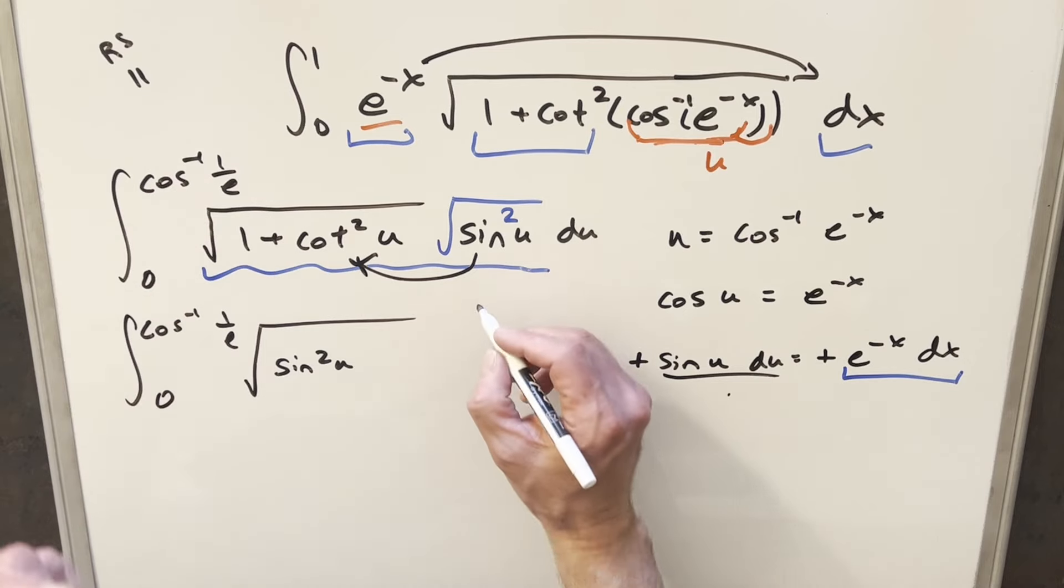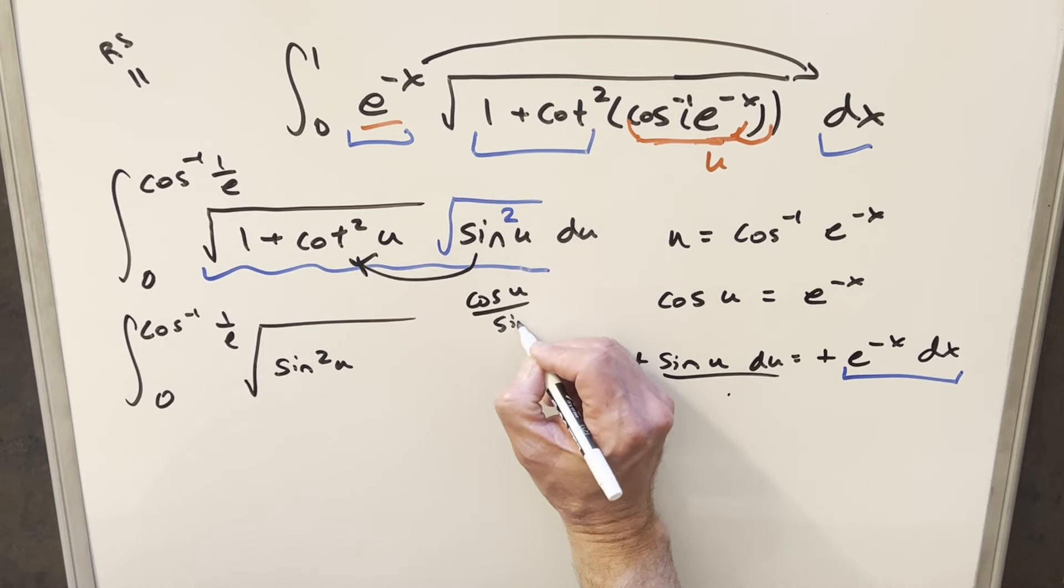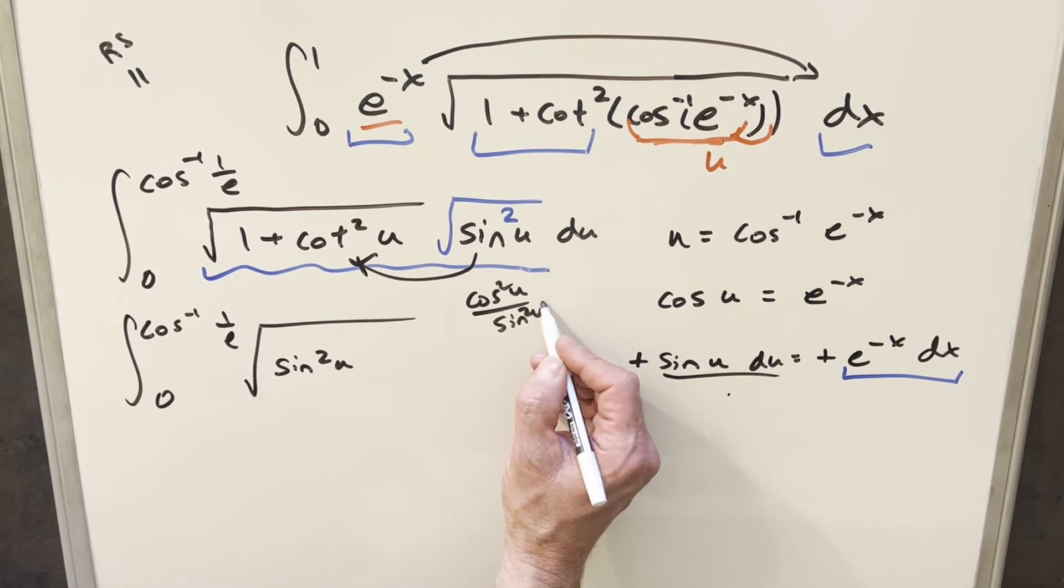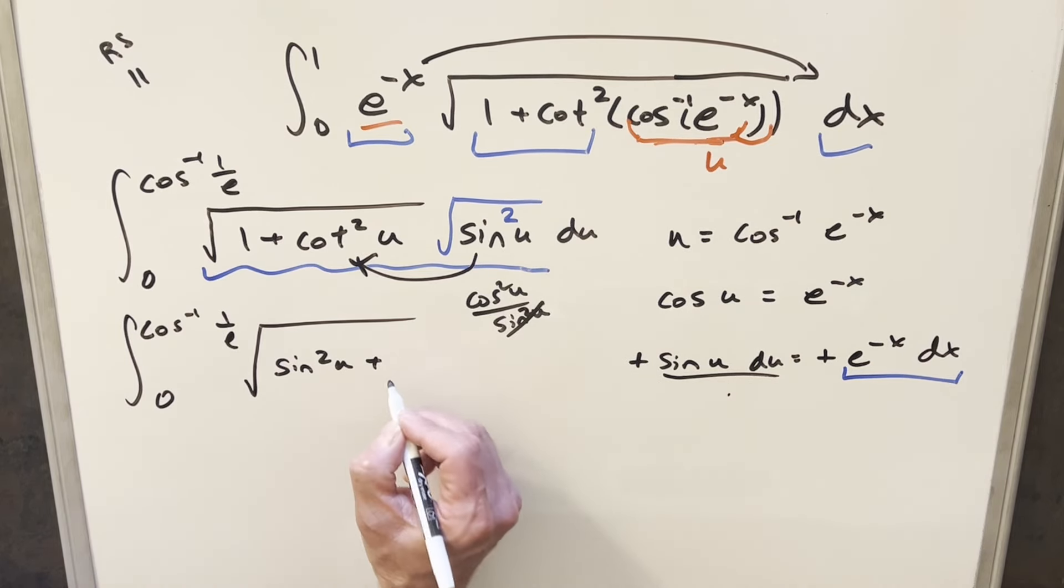Now multiplying sine squared u times cotangent squared u. Just remember cotangent is going to be cosine u over sine u. But this is all squared. So what's going to happen is the sine squared in the denominator is going to cancel out, and we're just going to be left with cosine squared u right here.